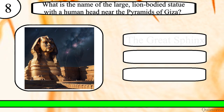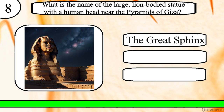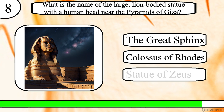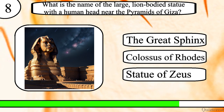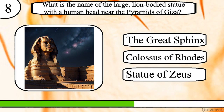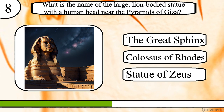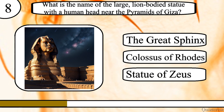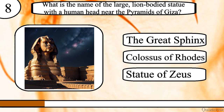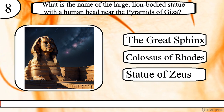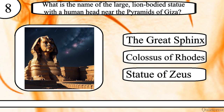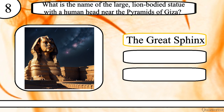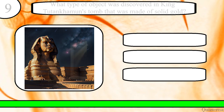Question 8. What is the name of the large lion-bodied statue with a human head near the pyramids of Giza? The Great Sphinx, Colossus of Rhodes or Statue of Zeus? The correct answer is the Great Sphinx.